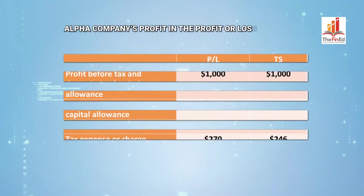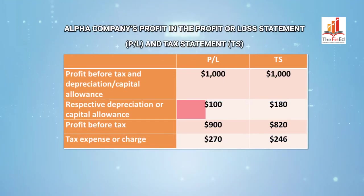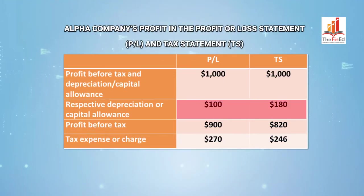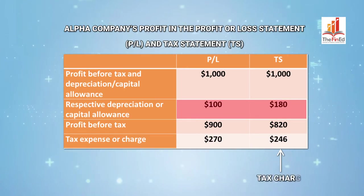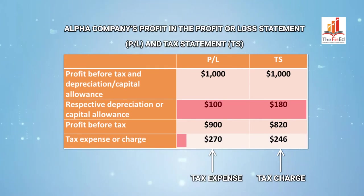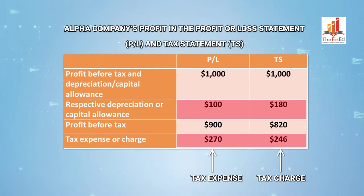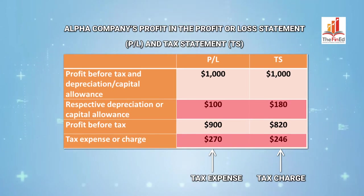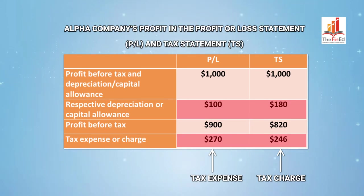Now after deducting the respective depreciation and capital allowance, you will immediately notice that there's a difference in the tax charge and the tax expense. Alpha's current tax liability is equal to $246, because this figure is based on the tax charge as reported on Alpha's tax statement.